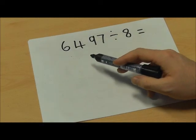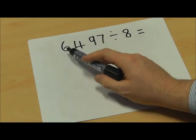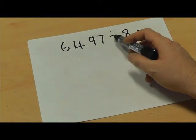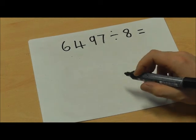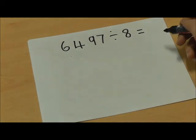In this calculation we're going to use the short division method to find the answer to 6497 divided by 8. What we will do this time though, rather than leaving the answer as a remainder, is we will show you how to turn it into a decimal.